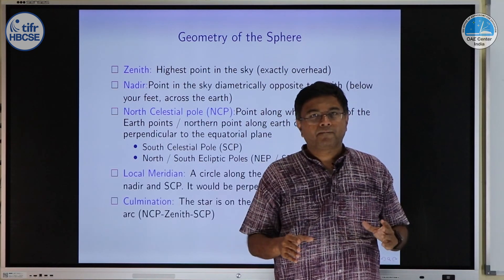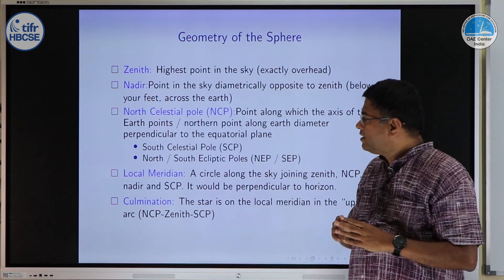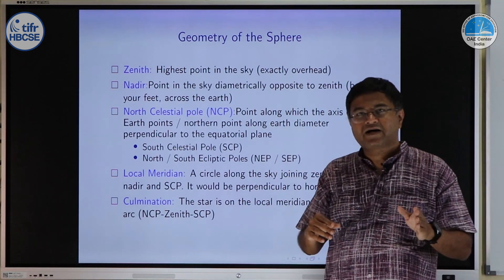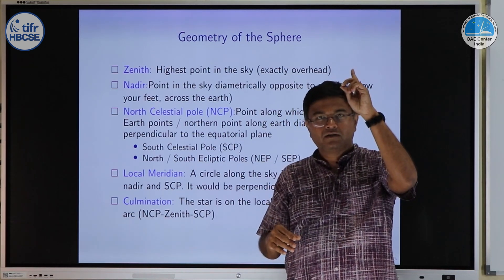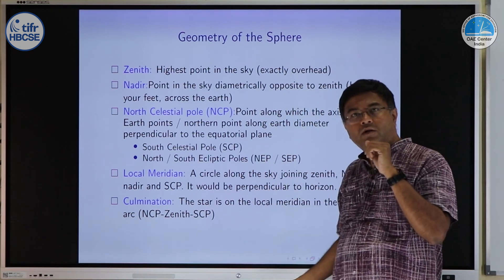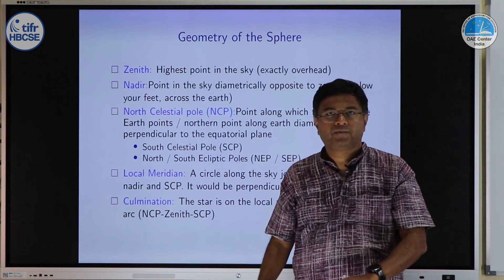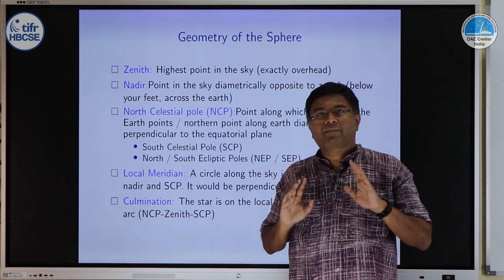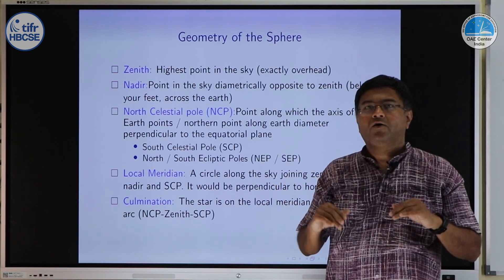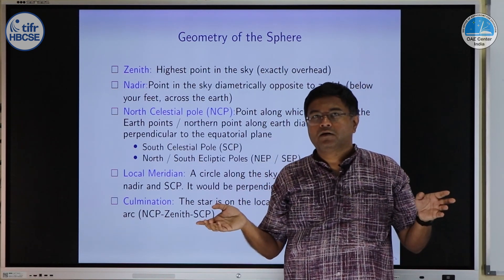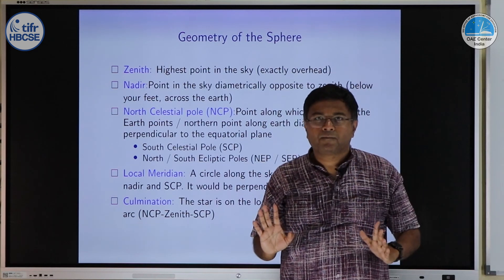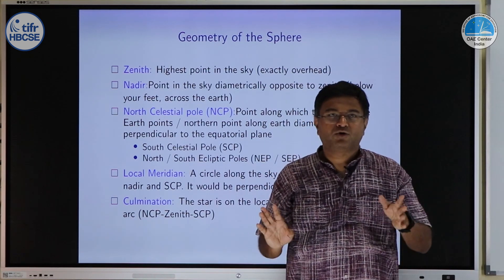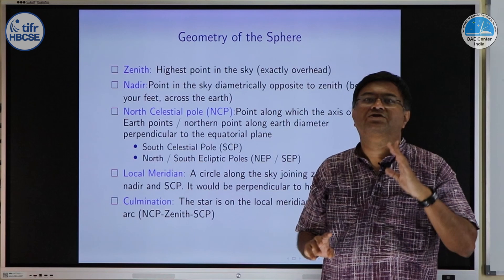Local meridian, as I have already mentioned, is a circle which passes through the north celestial pole, zenith, south celestial pole and nadir, full circle. For practical purposes, when we talk about local meridian, we talk about only the part which is visible above horizon for us. We ignore the part which is below horizon. But remember meridian is a full circle.